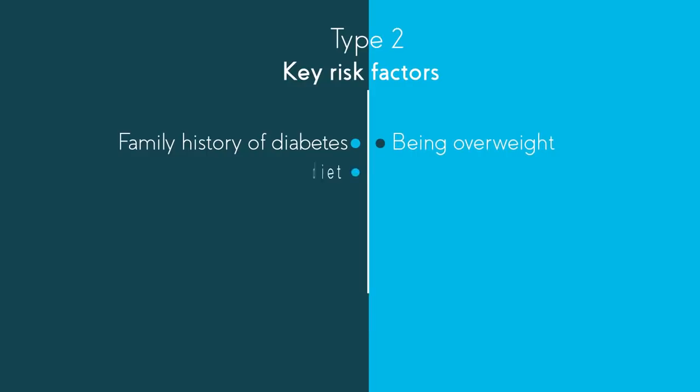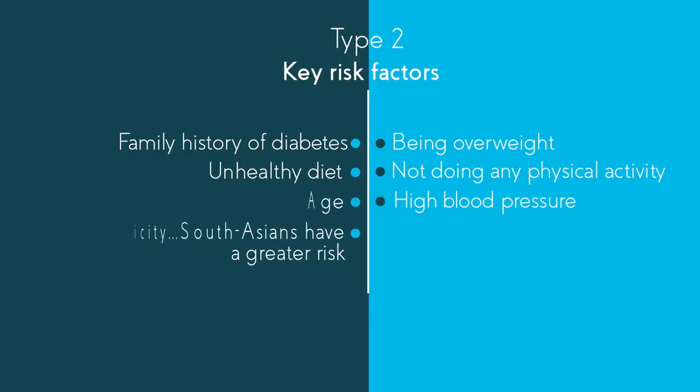There are some key risk factors associated with type 2 diabetes, including a family history of diabetes, being overweight, having an unhealthy diet, not doing much or any physical activity, age, high blood pressure, and ethnicity, where South Asians have a greater risk.